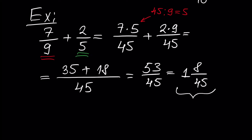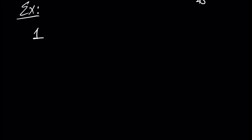This number is by definition 1 plus 8 over 45. Now let's talk about another rule which is very easy to understand: what if we have two mixed numbers? We'll use examples because it's very easy to understand the concept. For example: 1 and 3 over 7 plus 3 and 2 over 9. How to easily add these two mixed numbers, which have a whole part and a fractional part.